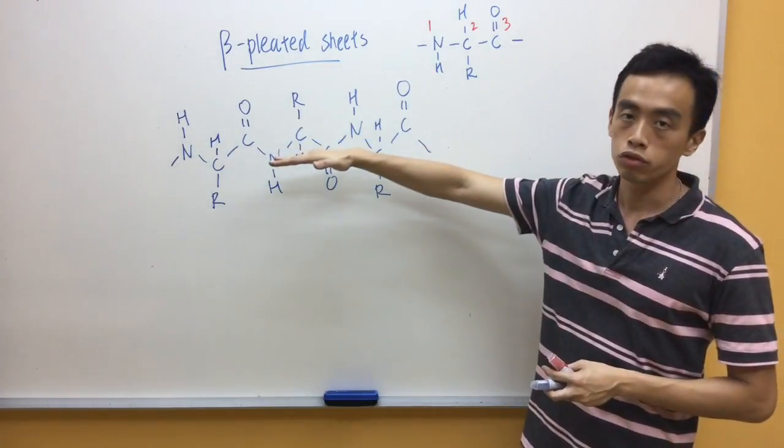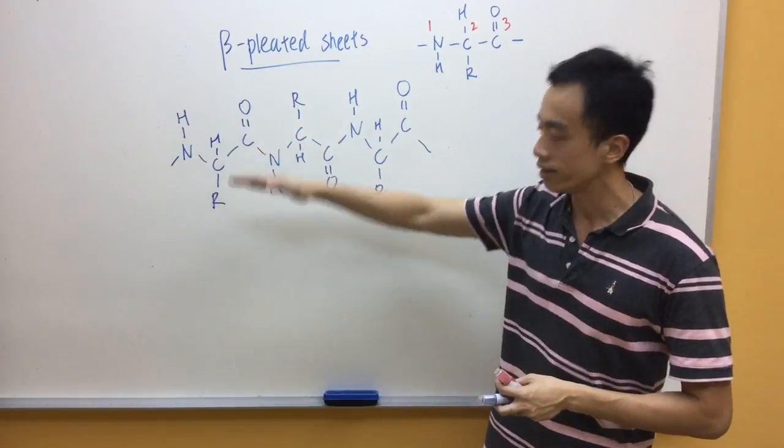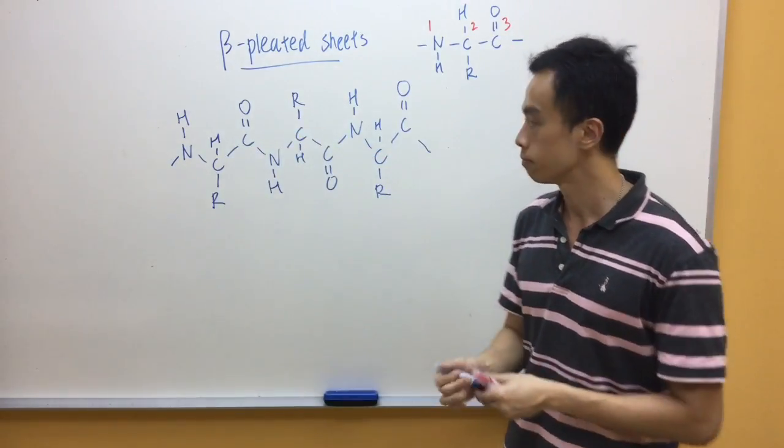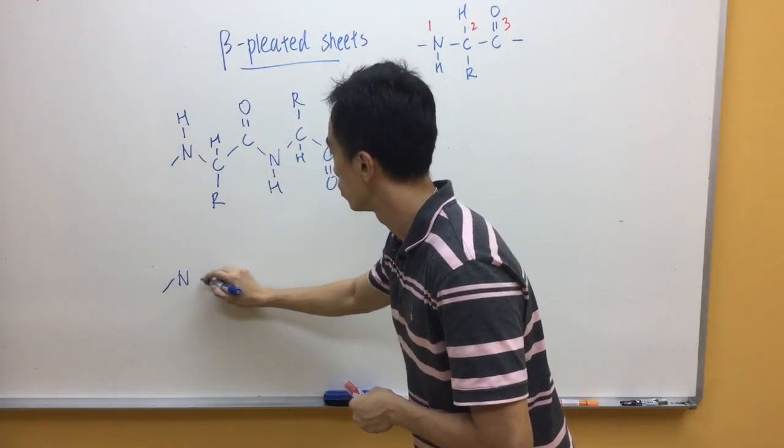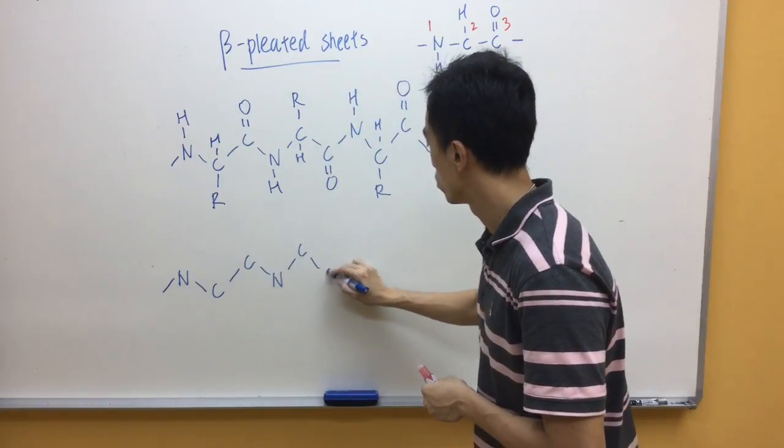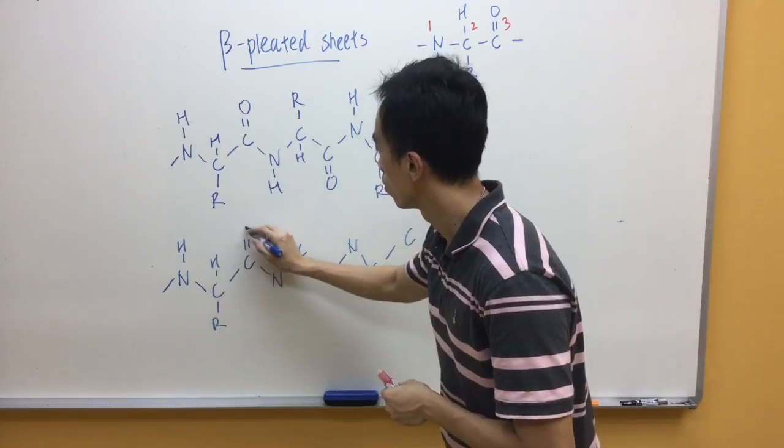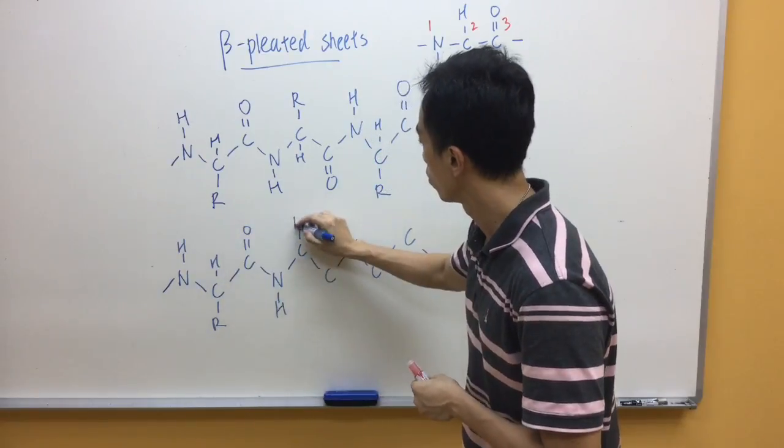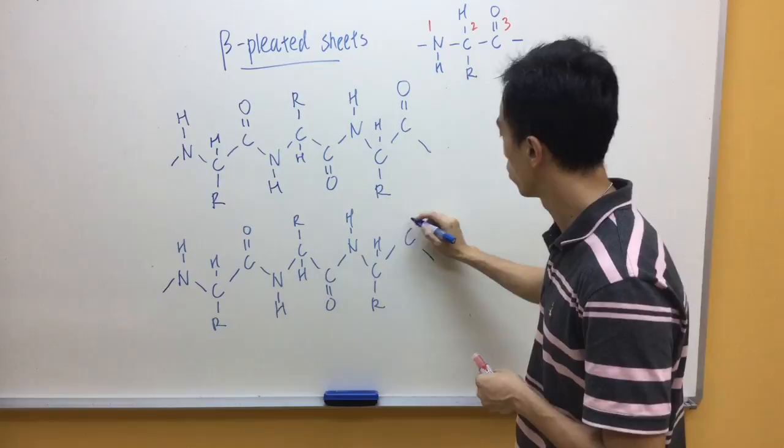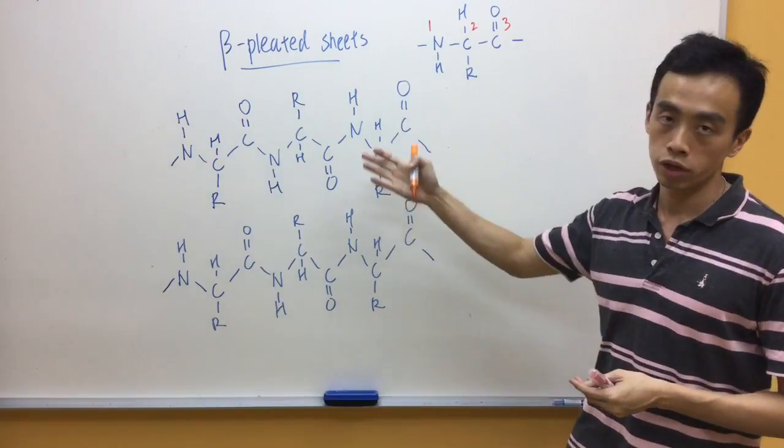After we draw one strand, what we do is duplicate this entire strand exactly below. Now, we have drawn the two strands.